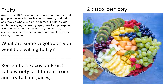The next food group is fruits. Any fruit or 100% fruit juice can count as part of the fruit group. Fruits may be fresh, canned, frozen, or dried, and may be whole, cut up, or pureed. Fruits include apples, oranges, bananas, grapes, peaches, pineapple, avocado, nectarines, strawberries, blueberries, cherries, raspberries, cantaloupe, watermelon, pears, and raisins.